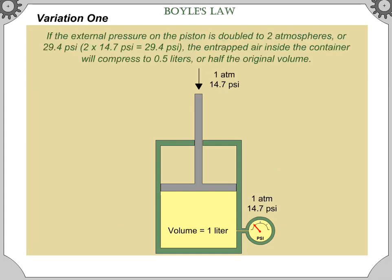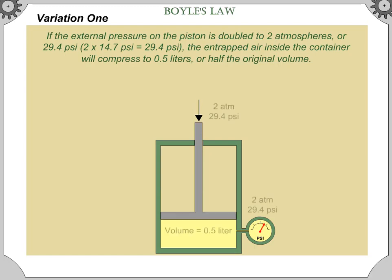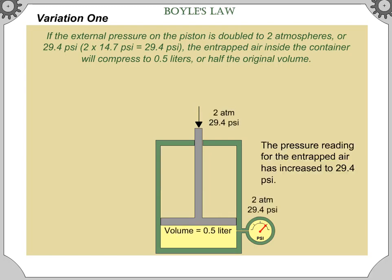If the external pressure on the piston is doubled to 2 atmospheres or 29.4 psi — 2 times 14.7 psi equals 29.4 psi — the entrapped air inside the container will compress to 0.5 liters, or half the original volume. The pressure reading for the entrapped air has increased to 29.4 psi.